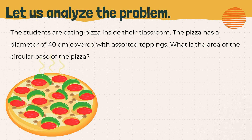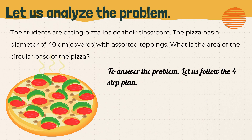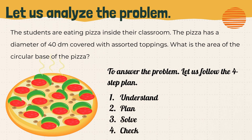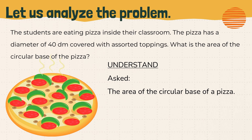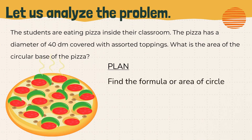Now let's analyze a problem. The students are eating pizza inside their classroom. The pizza has a diameter of 40 decimeters covered with assorted toppings. What is the area of the circular base of the pizza? Let us answer it by following the four-step plan: understand, plan, solve, and check. What is needed to be understood? The area of the circular base of a pizza. The given is a diameter of 40 decimeters.